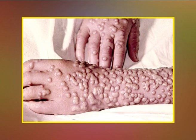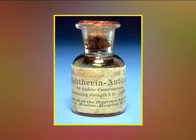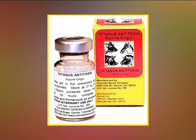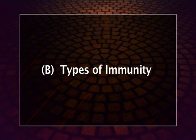Smallpox was the first disease to be eliminated by vaccination and the first disease officially declared wiped out by human efforts. Antibodies that neutralize toxins produced in the body or introduced from outside are called antitoxins. Antitoxins are now prepared artificially and used as a remedy for snakebite.